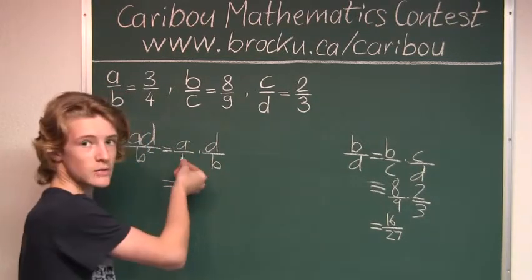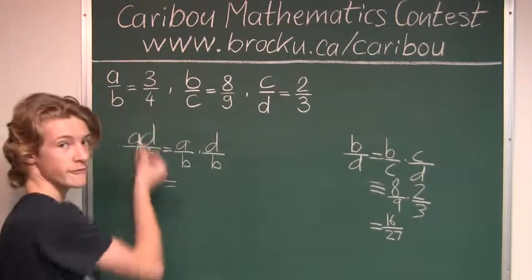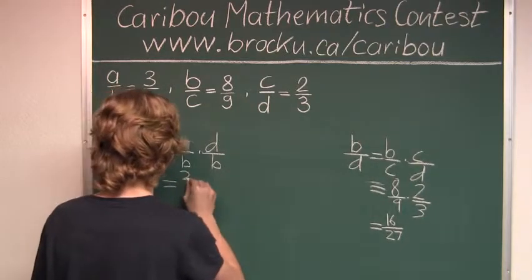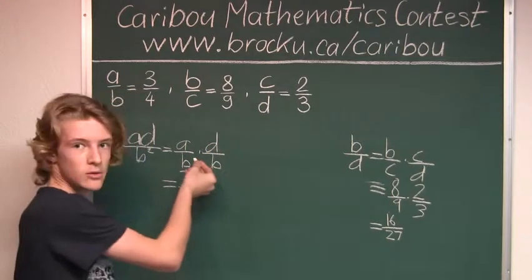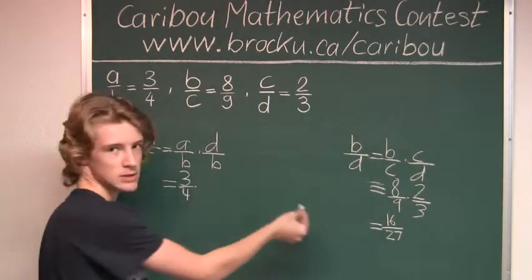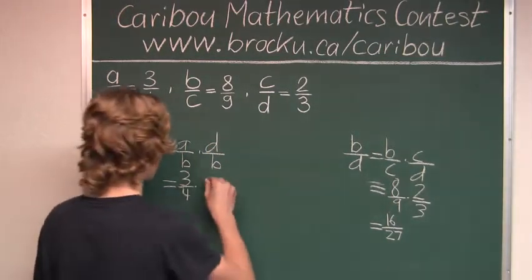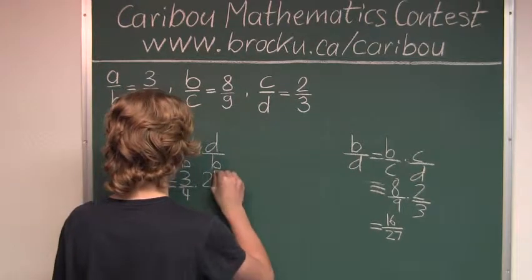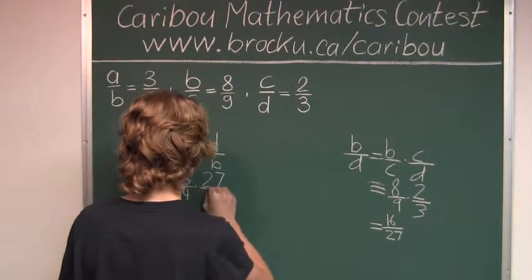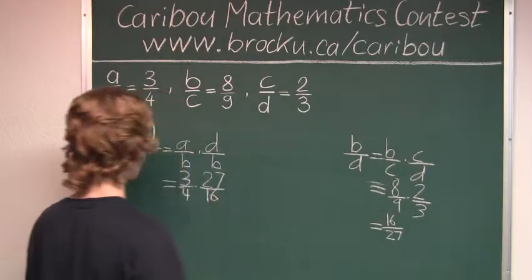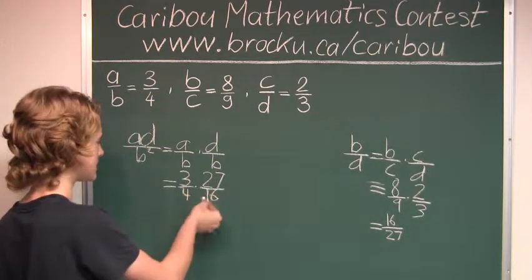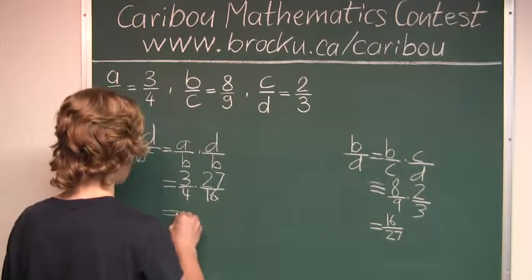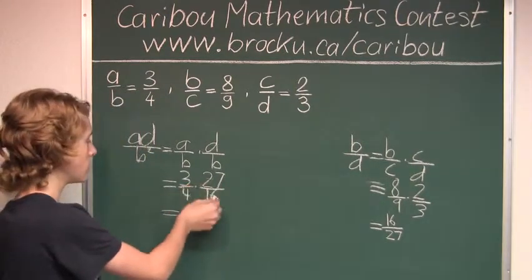We know A over B is 3 over 4, and D over B would be the inverse of this, which is 27 over 16. So 3 over 4 times 27 over 16 equals 81 over 64.